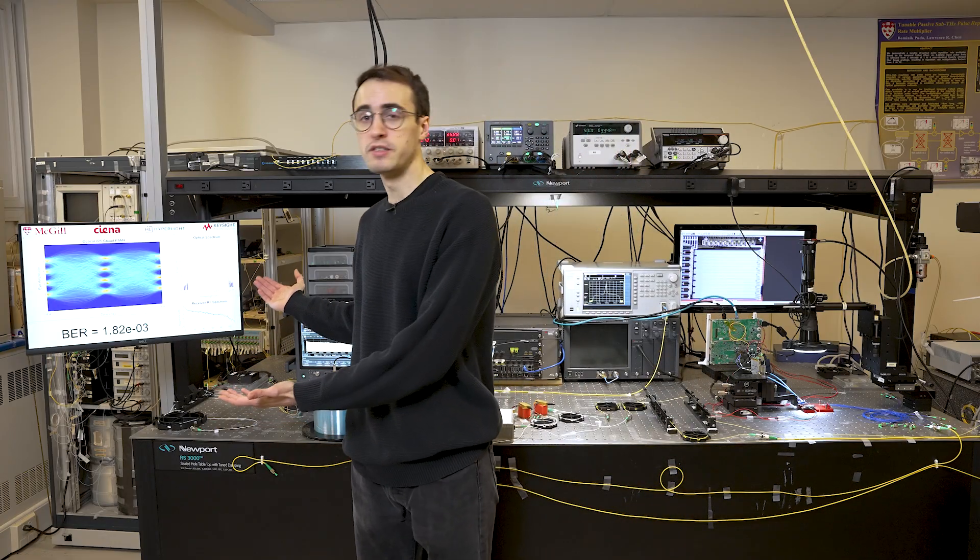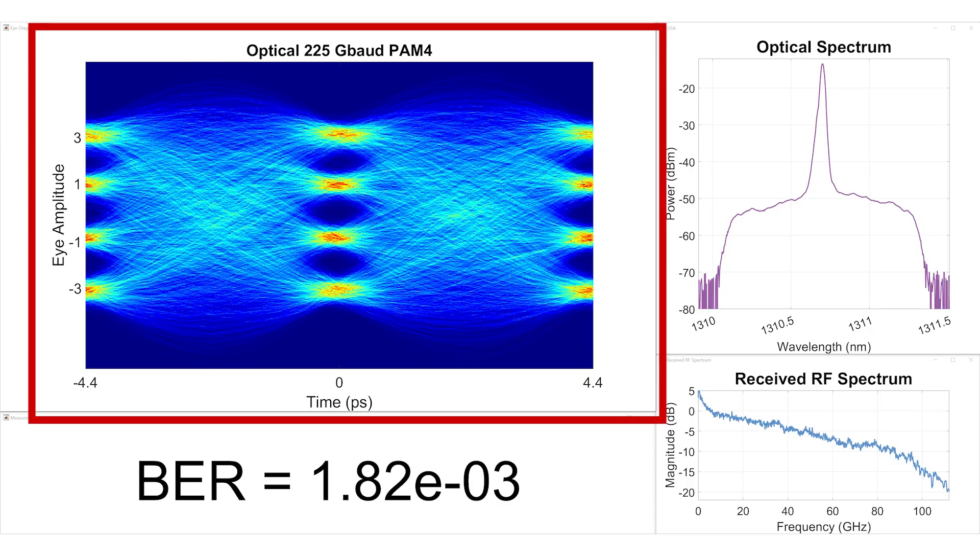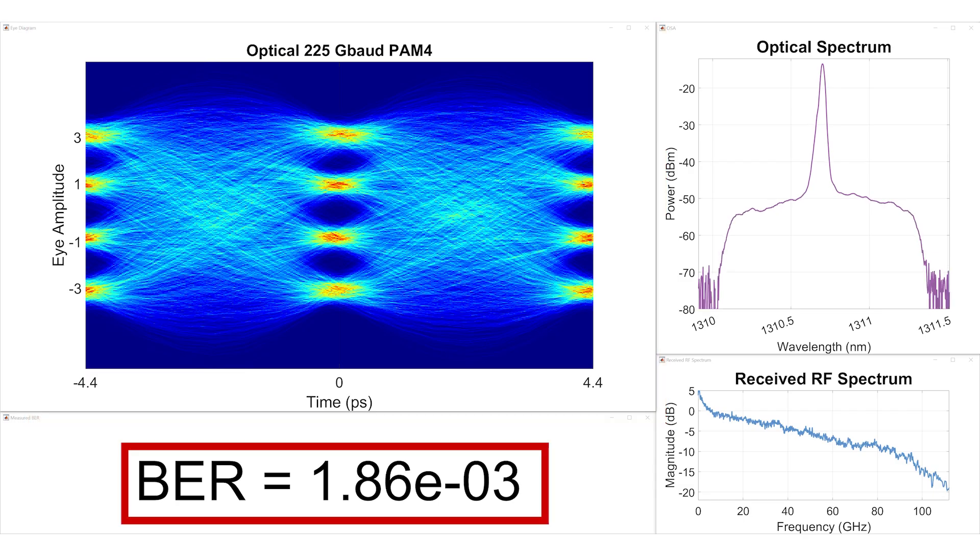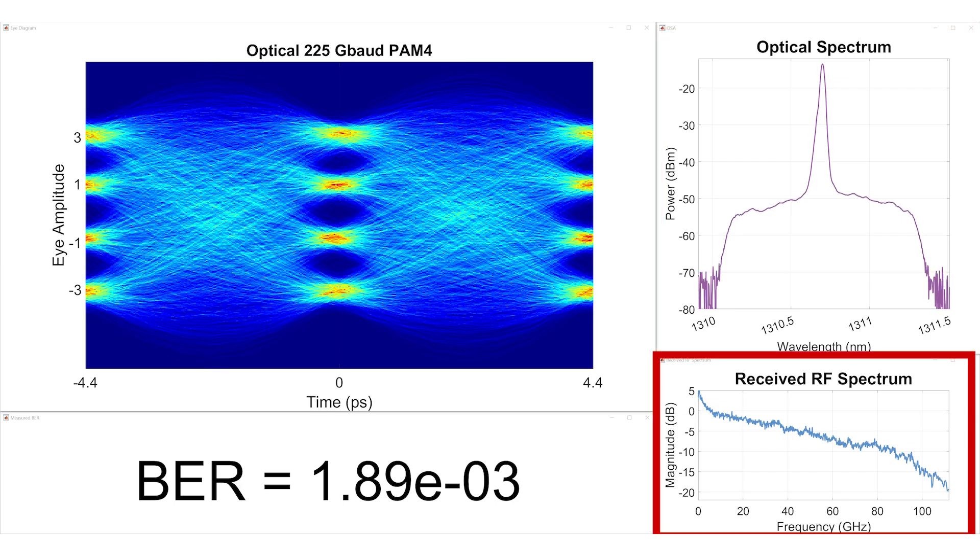Here we show the impressive results we've achieved. We have an eye diagram running at 225 gigabit PAM4 which shows clear transitions and an open eye. We also have a bit error rate under the hard decision forward error correction bit error rate threshold. We show the optical spectrum of the single wavelength experiment as well as its RF received spectrum.